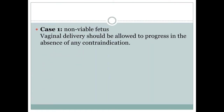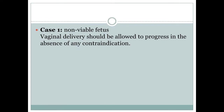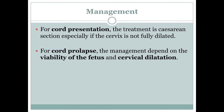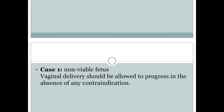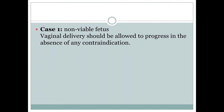Case 1: How do you manage cord prolapse with a non-viable fetus? In a non-viable fetus, vaginal delivery should be allowed to progress in the absence of any contraindication.